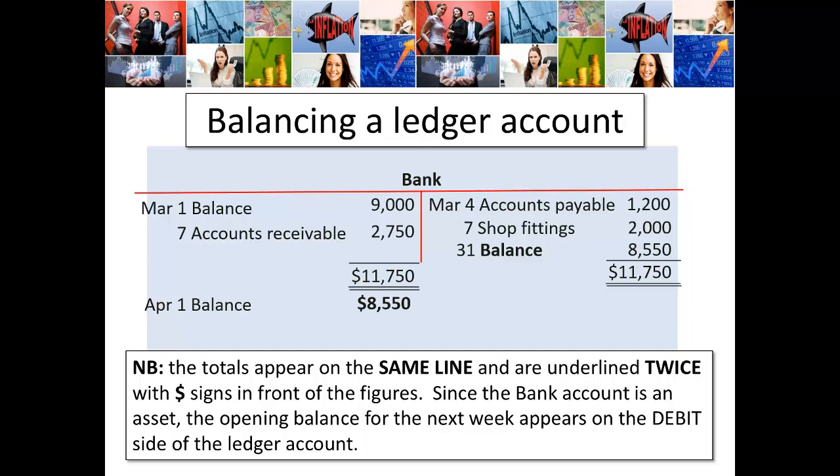Just a note: the totals appear on the same line and are underlined twice, with dollar signs in front of each figure. And since the bank account is an asset, when we open the next balance for the next week or the next month, it's going to appear on the debit side of that ledger account. Super simple, super fast — I hope you've got it. Write those four steps down, practice them, remember them.